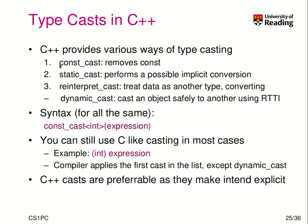In terms of syntax, these are the cast types supported by C++, and they are templates you apply to an expression. For example, you take an expression, apply const_cast to it, and specify the target type such as integer. You can still use C-style casting with int in brackets before the expression, but when you do that, the compiler tries each cast in order — first const_cast, then static_cast, then reinterpret_cast — stopping when one works. Dynamic casts are not checked with this implicit C-style formulation.